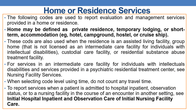Coming to home or resident services — the following codes are used to report evaluation and management services provided in the home or residence. Home may be defined as a private residence, temporary lodging or short-term accommodation — for example, a hotel, campground, hostel, or cruise ship. These codes are also used when the residence is an assisted living facility or a group home not licensed as an intermediate care facility for individuals with intellectual disabilities.